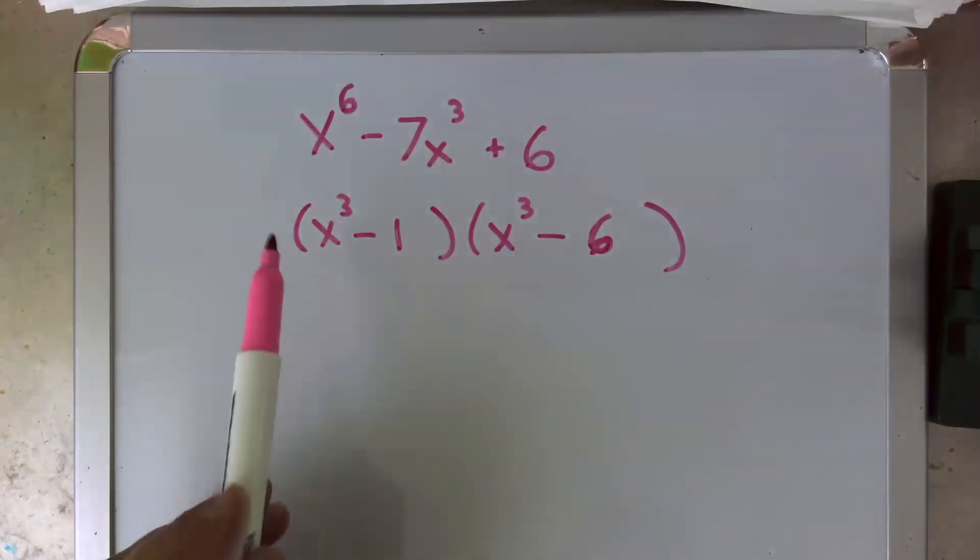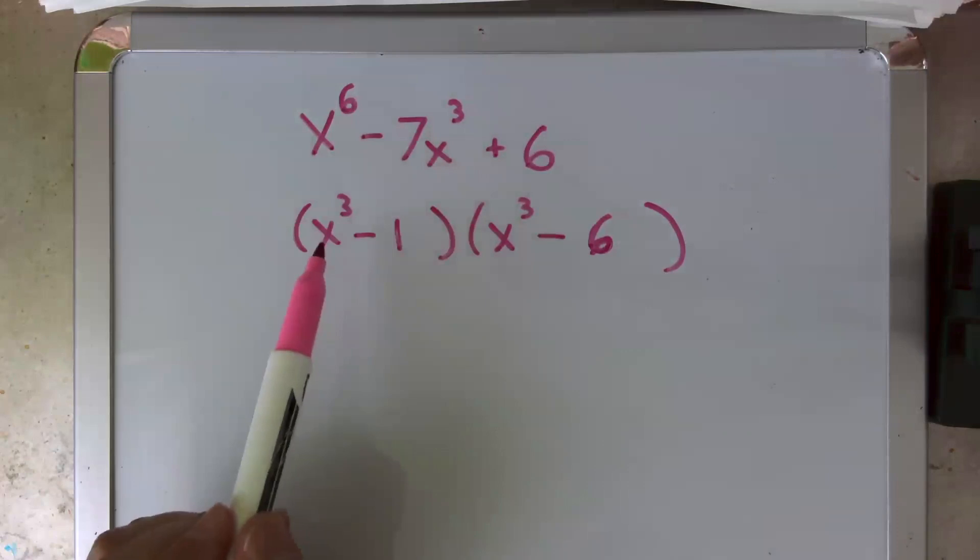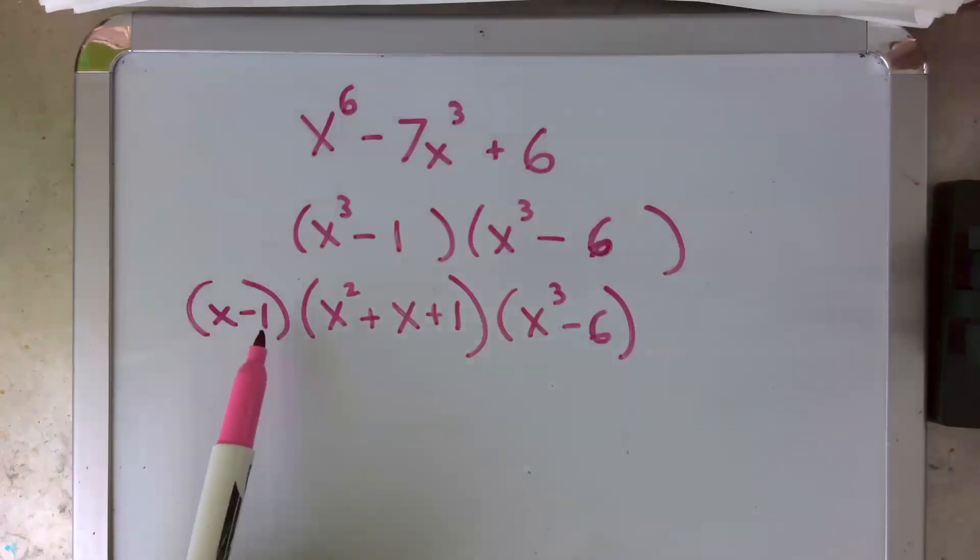And once again, if these were just x's, we'd be done because this is x to the third, we're going to check for a difference of cubes and a sum of cubes. This isn't familiar, go ahead and check out this video. Otherwise, right here, x cubed is something cubed, one is something cubed, there's my difference. So I know I can further factor this into x plus one times x squared plus x plus one times our other fact.